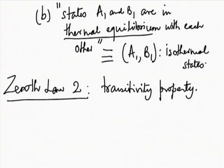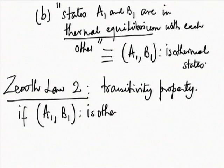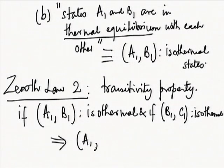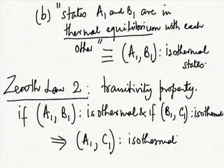The second part simply states what all of us know as the zeroth law of thermodynamics: if A1 and B1 are isothermal states, and B1 and C1 are isothermal states, then this implies that A1 and C1 are also isothermal states. This is the zeroth law as stated in most textbooks, but the proper formulation — due to Langsberg and others — requires the existence part as well.